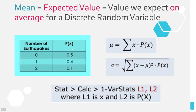We also peeked last time into the idea of the expected value for discrete random variables — the value you expect to get on average. We didn't use this formula last time, we used the calculator, and that's what I want you to use. But I am going to do an example of how to compute this by hand.